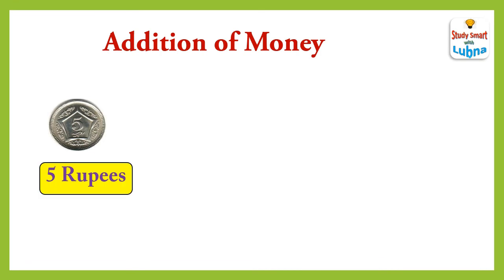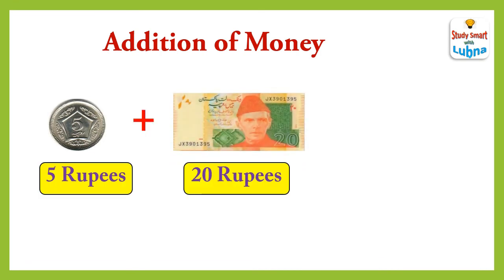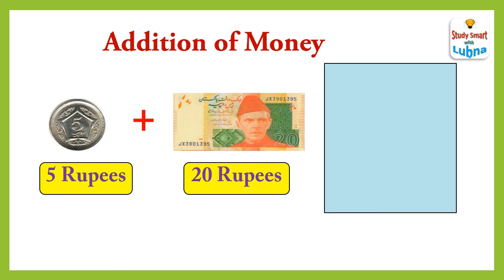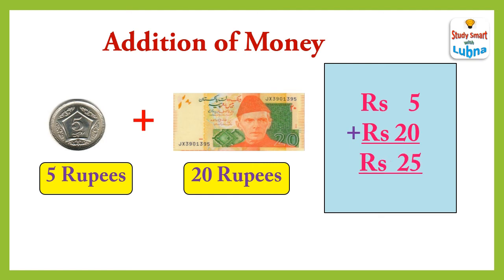When we add 5 rupees coin with 20 rupees note, what will we get? Let's see. Rupees 5 plus rupees 20 — when we add them, we will get rupees 25.